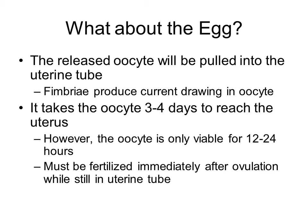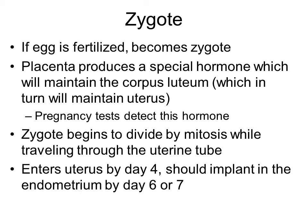When ovulation occurs, the released oocyte is drawn into the uterine tube by the current created by the moving fimbriae. It takes about three to four days to reach the uterus, but the oocyte is only viable for 12 to 24 hours. That means fertilization must occur while the oocyte is still in the uterine tube. If the egg is fertilized — now called a zygote — it begins going through mitosis while still traveling through the uterine tube toward the uterus.